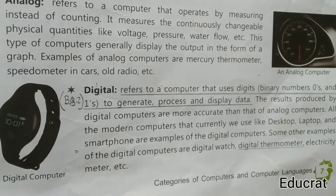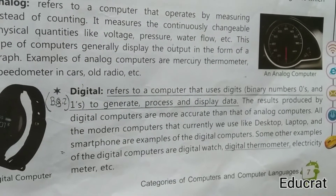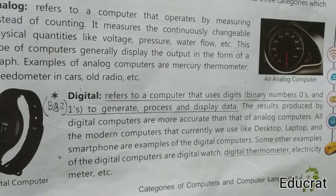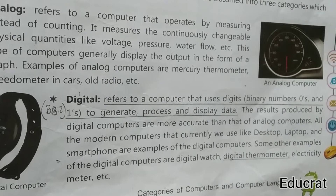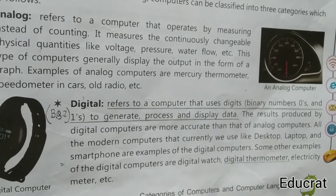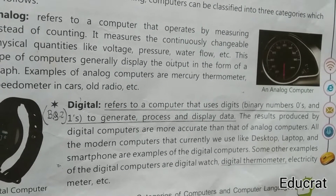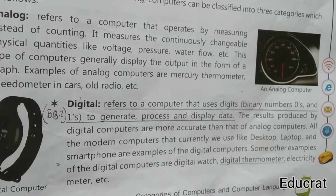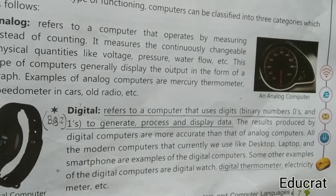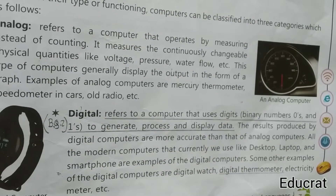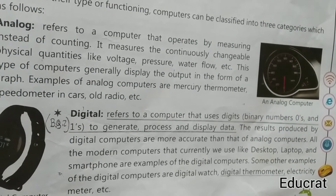A digital computer refers to a computer that uses digits, binary numbers — zeros and ones — to generate, process, and display data. The results produced by digital computers are more accurate than those of analog computers. Modern computers such as desktops, laptops, and smartphones are examples of digital computers.